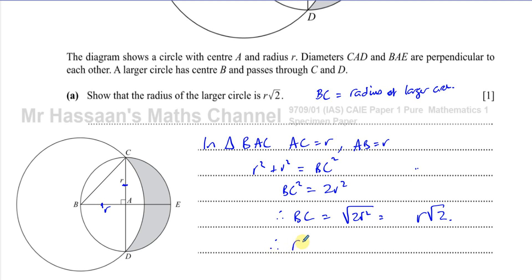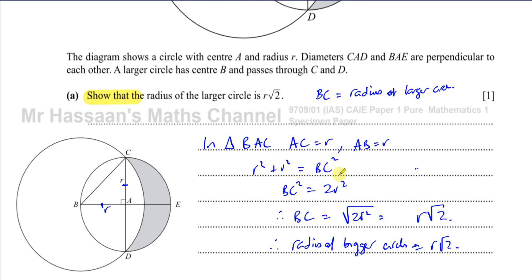Therefore the radius of the bigger circle is equal to R root 2. That's the answer to part A. It's pretty simple, but when they say 'show that,' you can't just write down the answer. It's always better to show your steps clearly — R squared plus R squared equals BC squared, show how that simplifies. Even though it's only worth one mark, always show your steps clearly because they've given you the answer and you have to show how you get there.